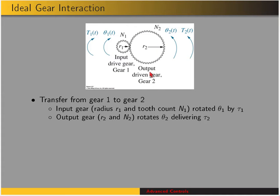We're going to look at ideal gear interactions. This means there's no backlash — no slot between the gears — so whenever gear 1 moves, gear 2 moves. We're going to look at how inputs are transferred to outputs. The input gear has a radius R1 and a tooth count N1, and it is rotated a distance theta 1.